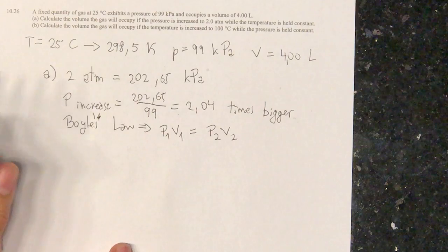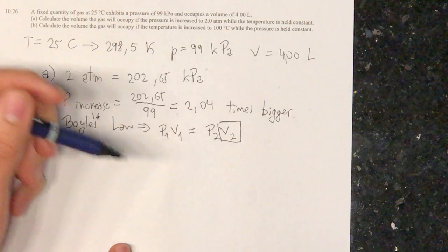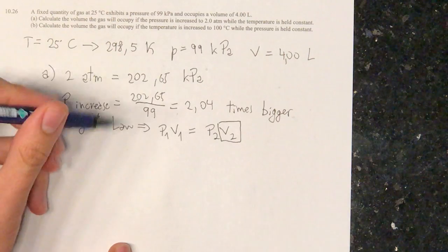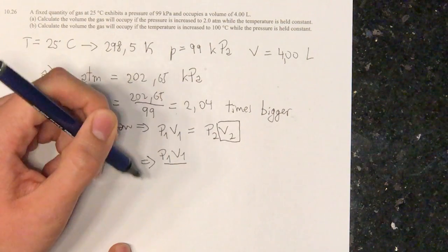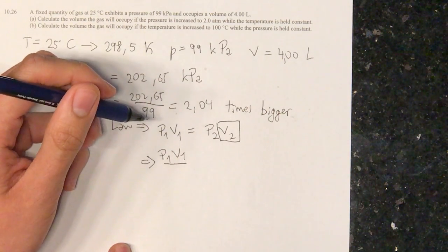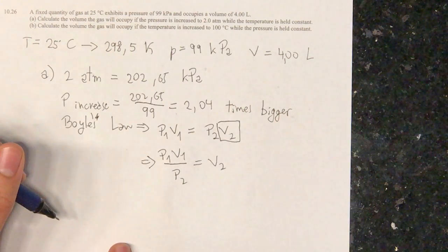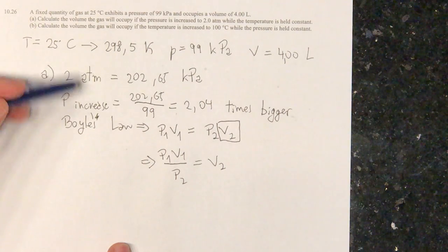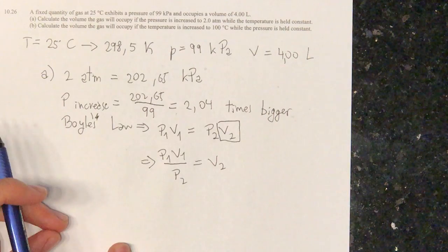What we are looking for is volume 2. We just transform the equation so as to have volume 2 as our unknown. In the end we have P1 V1 divided by pressure 2, that gives us the volume 2, which is the volume that our gas will have in this different pressure, 2 ATMs or 202.65 kilopascals.